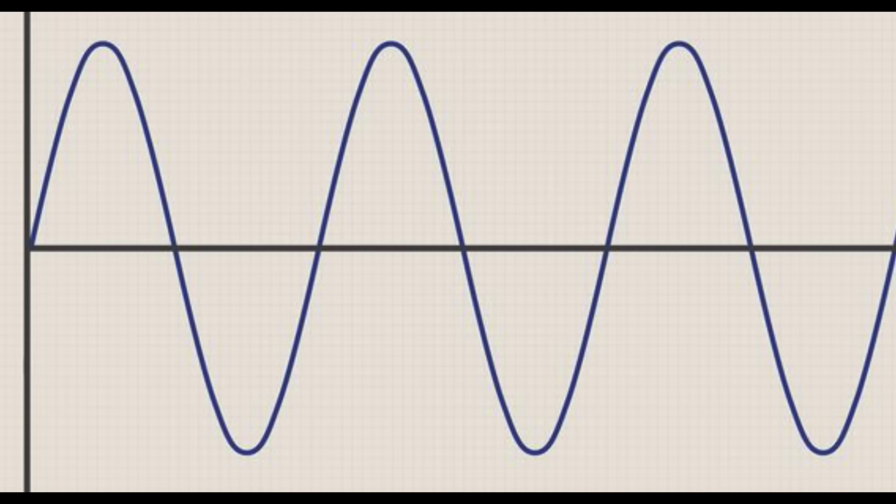Now, let's remember, the galactic current sheet contains the magnetic reversal point, which is where there is a null, a magnetic zero point. At the exact crossing moment, we will be subject to zero galactic magnetism. It is also the dusty plasma density maximum, as the galactic sheet is acting like an electrostatic Swiffer duster sweeping through the galaxy.